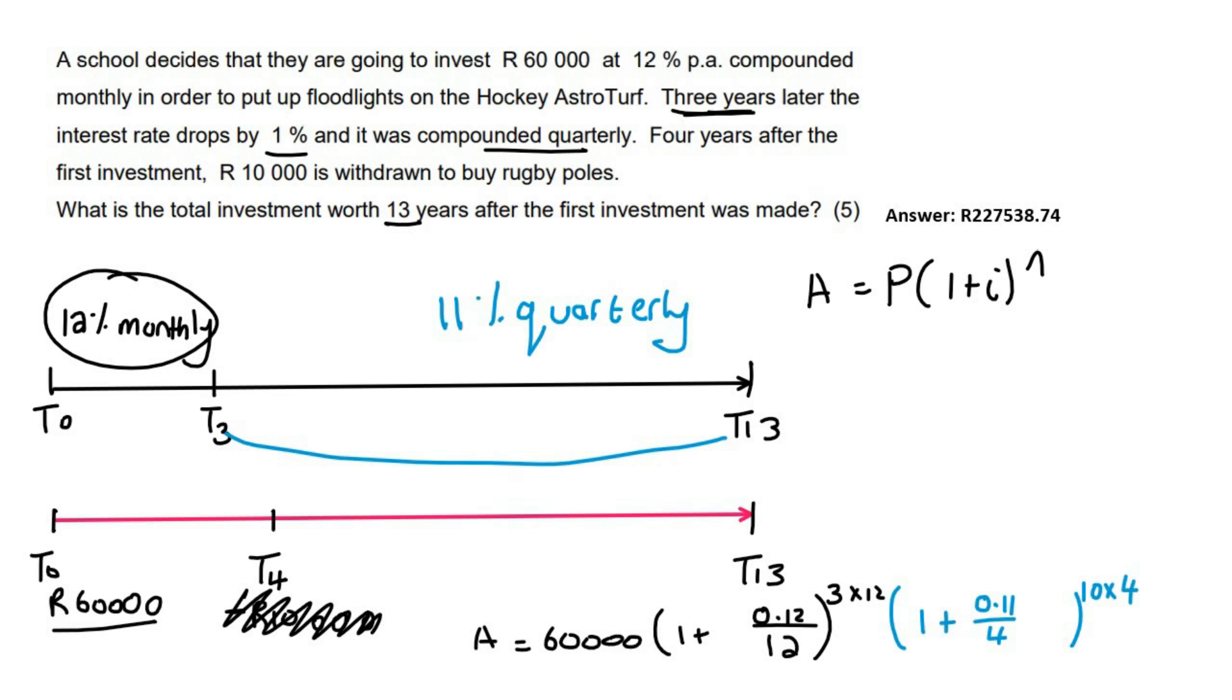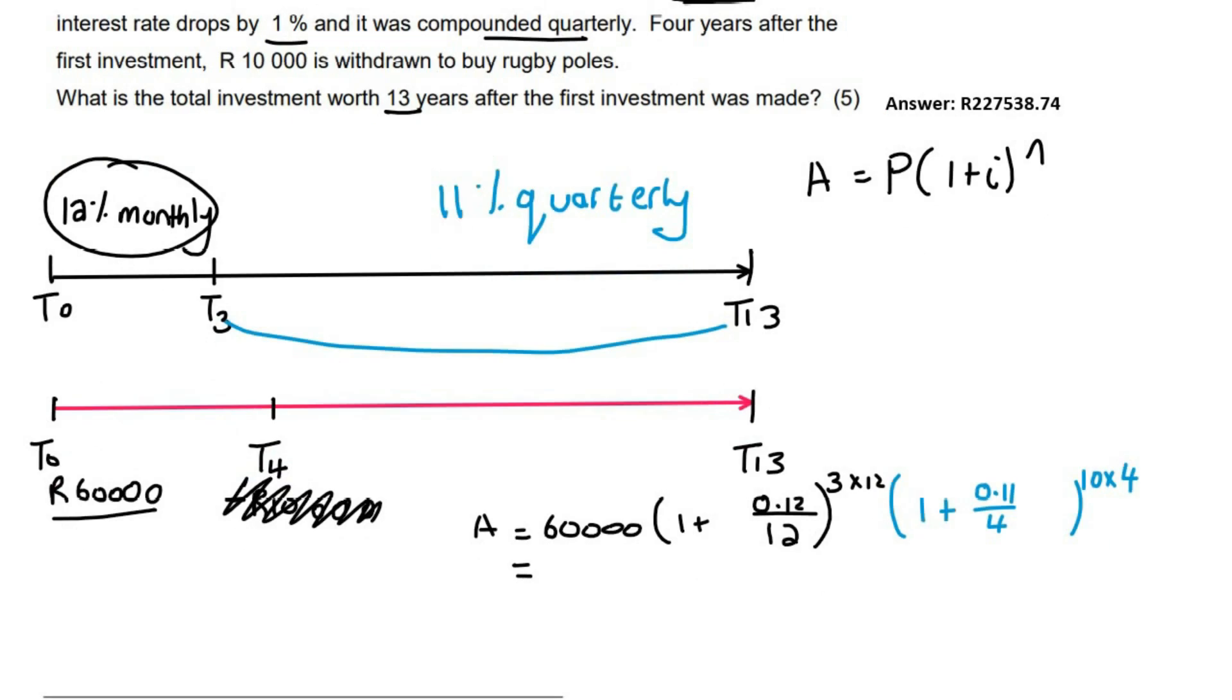Then I would go ahead, type this all in. And let's see what we get for this one. And so that's going to be, now don't round off because it's not our final answer. So that is what that 60,000 Rand would have become.